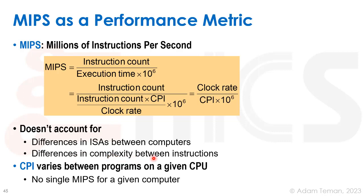However, MIPS doesn't account for everything. It doesn't account for differences in ISAs between computers — instruction count will be much lower for a CISC machine versus a RISC machine. It doesn't account for differences in instruction complexity, and CPI varies between programs on a given CPU depending on what program is running and how it was compiled. So there isn't even a single MIPS number for a given computer. You may see MIPS or other figures of merit used to compare machines, like AMD versus Intel, but these can be cherry-picked and don't tell the whole story.